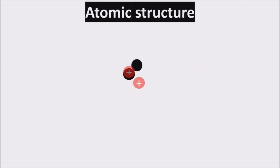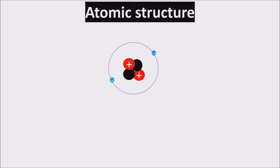An atom is composed by a nucleus of neutrons and protons, surrounded by electrons. Atoms are electrically neutral, so they have the same number of electrons and protons. Electrons cannot stay wherever, but they move in certain pathways around the nucleus called orbitals. Orbitals are organized in shells and subshells.